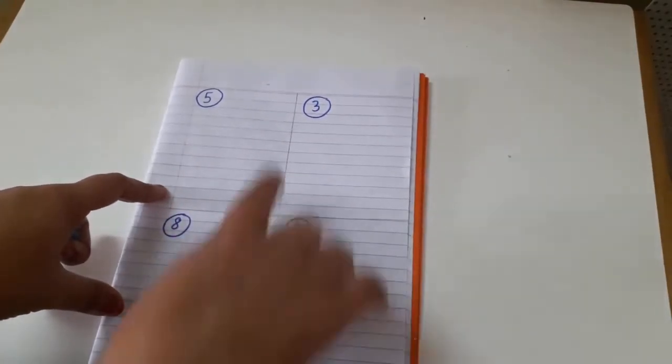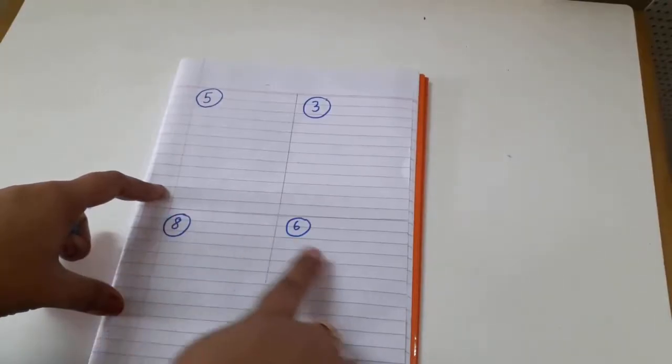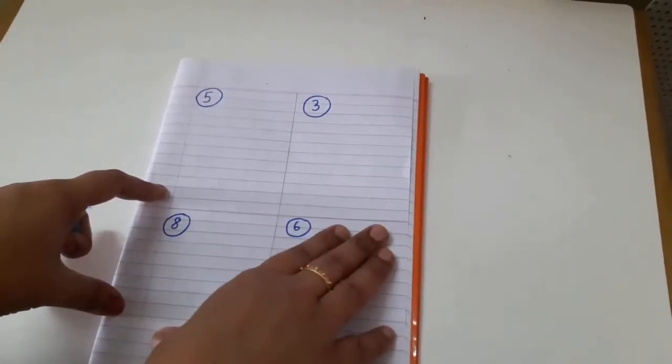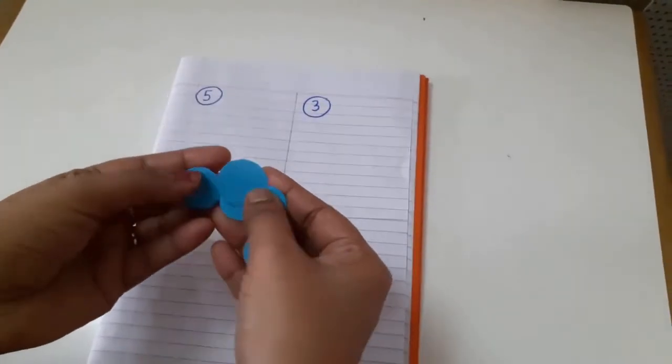The next activity what we are going to see is a sticking activity where I have divided the paper into 4 and have written different numbers here. What you have to give is stickers or paper cutouts like these ones.